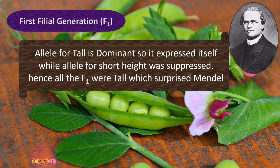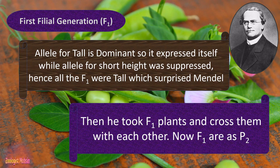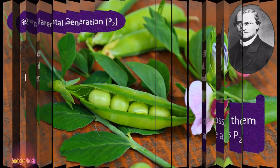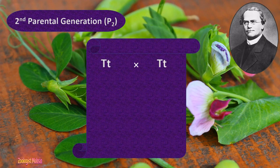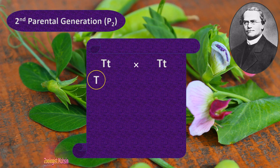The allele for tall was dominant, so it expressed itself while the allele for short height was suppressed. Hence all the F1 were tall, which surprised Mendel. He then took F1 plants and crossed them with each other. Now F1 are acting as P2, and this is the second cross Mendel made. The offspring of P1 are now acting as P2.